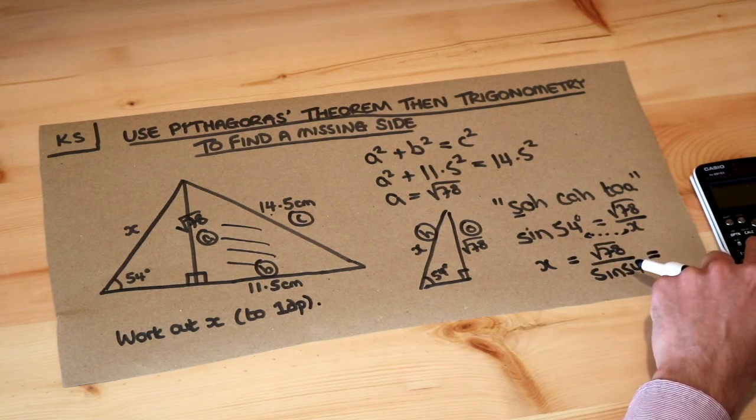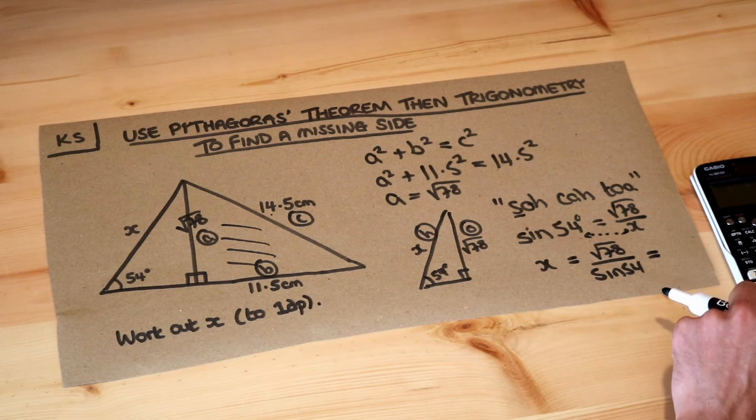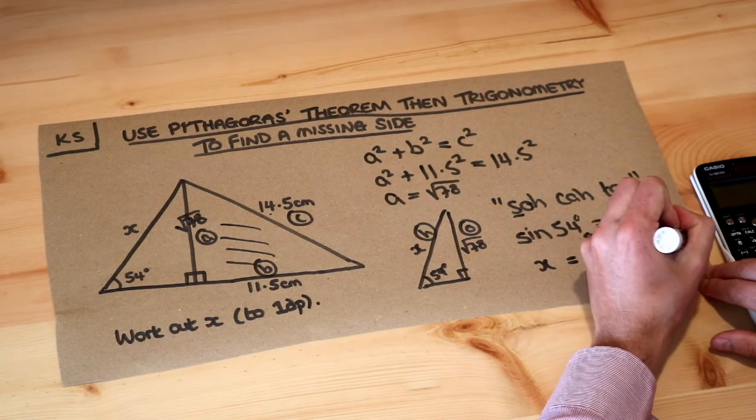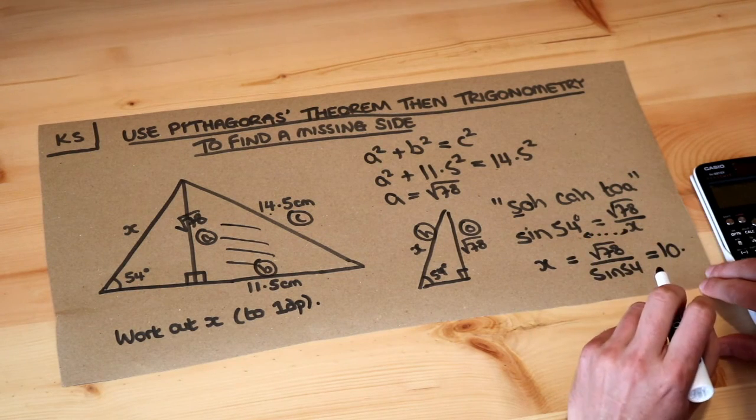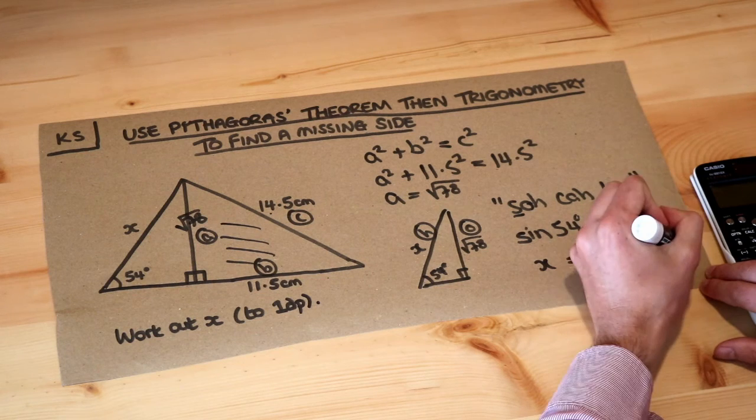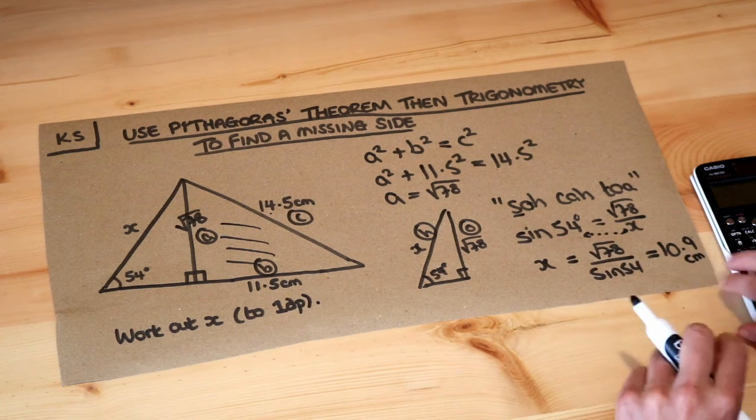So we then put that into our calculator: √78 / sin 54° and that gives you 10.9166. We want it to one decimal place so 10.9 will do, and that's in centimeters. That's the final answer.